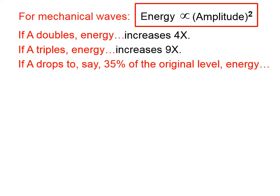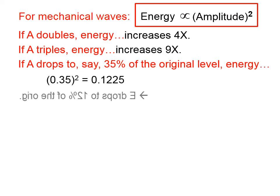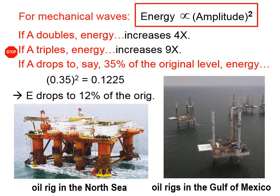If the amplitude drops to 35% of the original level, then 0.35 squared is about 12% of the original energy. So in a mechanical wave, the amplitude squared is what's proportional to energy.